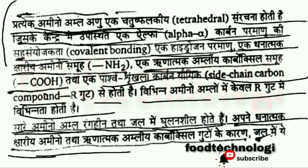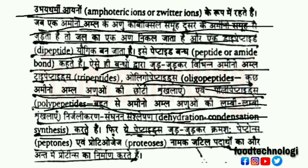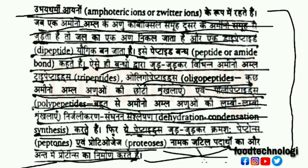Amino acids join together via peptide bonds. The process — also called nirjalikarana, sanghanana, sanshileshana, dehydration, or condensation synthesis — links peptides together to form peptones, proteoses, and complex compounds, ultimately resulting in the formation of proteins.